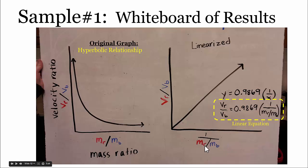The x variable was the mass ratio, so the inverse of the mass ratio versus the velocity ratio gave them a straight line. And their equation was the velocity ratio was equal to 0.9869 times the inverse of the mass ratio.